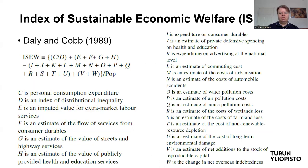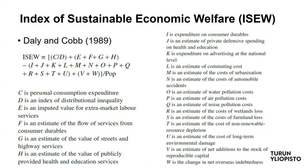One of the attempts, which is also mentioned in the textbook by Perman et al., is the Index of Sustainable Economic Welfare, or ISEW, initially proposed by Daly and Cobb in the late 1980s.